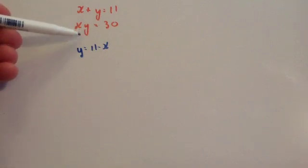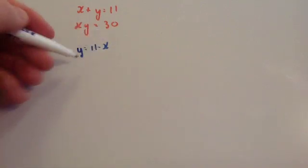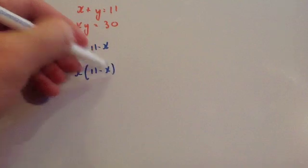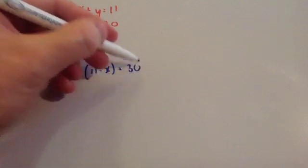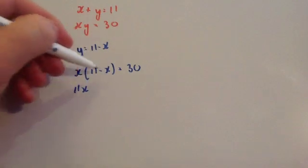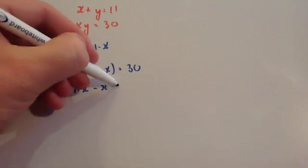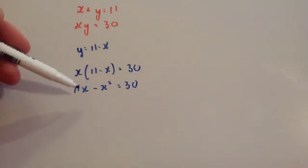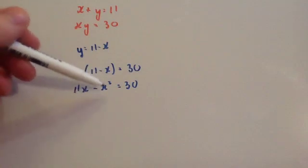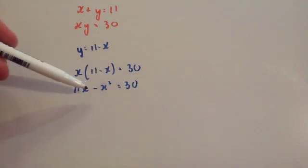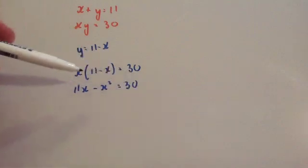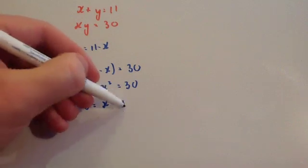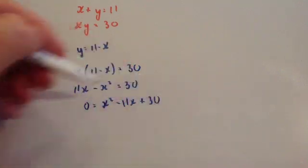Instead of y, write (11 minus x) in brackets, so you've got x times (11 minus x) equals 30. Expanding gives 11x minus x squared equals 30. Because it's useful to have the x squared positive, add x squared to both sides and subtract 11x from both sides, giving x squared minus 11x plus 30 equals 0.